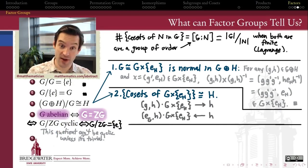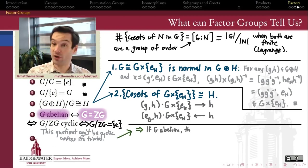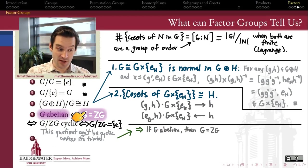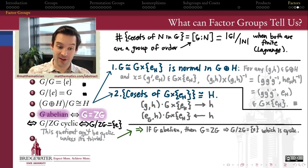The content of the theorem is that the only way for the quotient of a group by its own center to be cyclic is for it to be trivial, and therefore for the whole group to be abelian. For the forward direction: if G is an abelian group, then G is equal to its own center. Therefore the quotient G mod Z(G) is the same as G mod G, which is trivial. But the trivial group is trivially a cyclic group of order one, so the forward direction is simple.